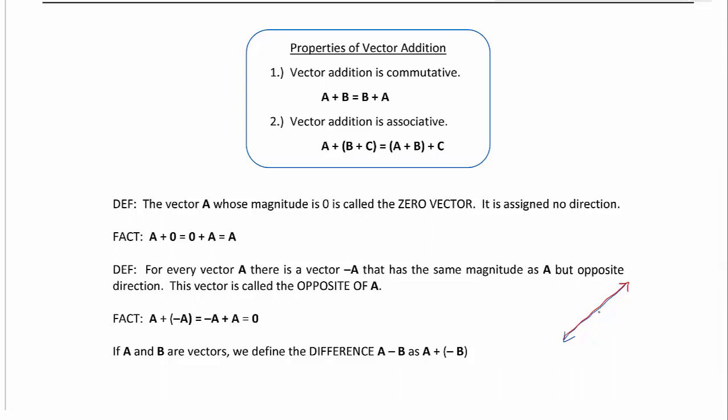If A and B are vectors, we define the difference A minus B as A plus the opposite of B. So again, that still goes right back to our rules of adding real numbers that we can always add the opposite.